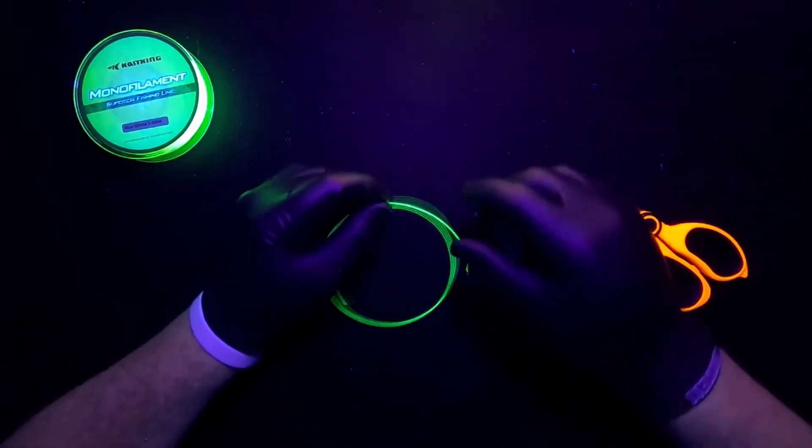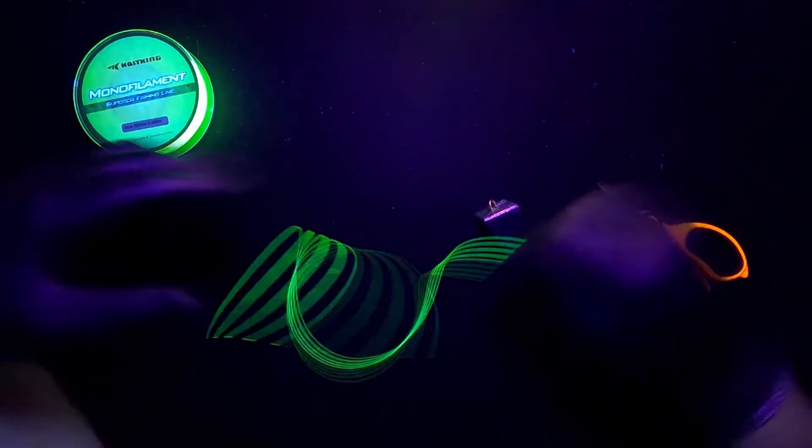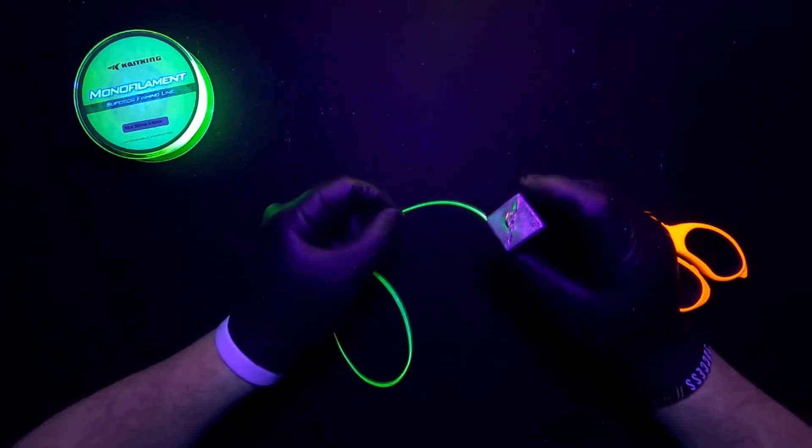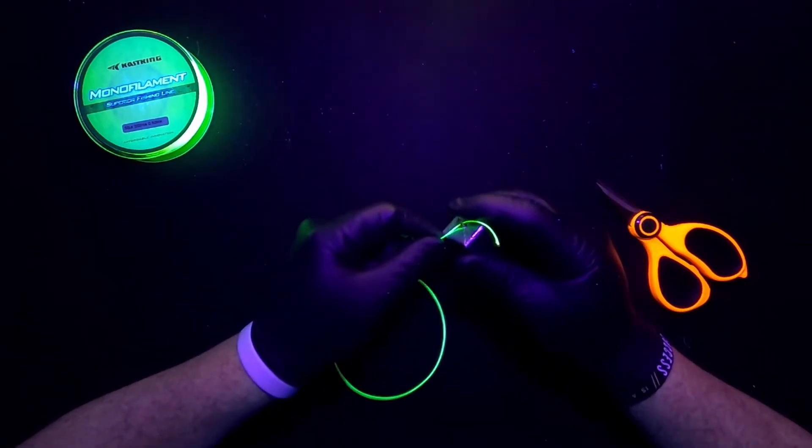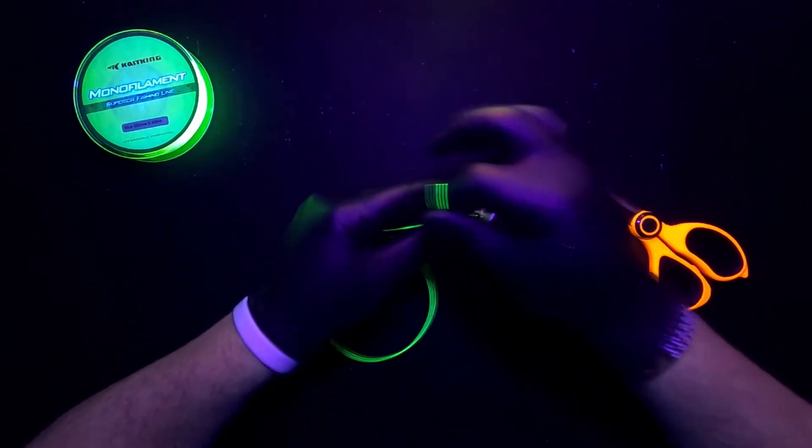Guys, this is a super quick knot, so we're gonna run through this and get you on the water. First, put it through the eyelet of your bait or your hook, whichever you may be using.